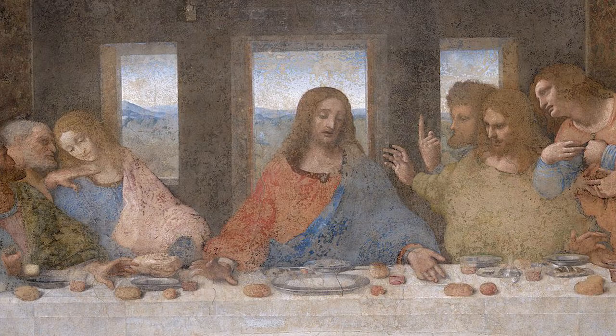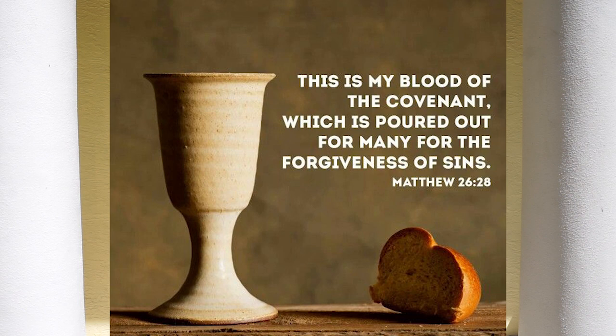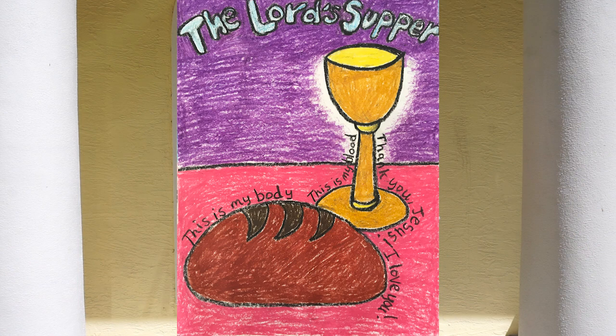Jesus is reaching with both hands towards the cup of wine and the bread. Let's hear God's word: 'As they were eating, Jesus took bread, blessed and broke it, gave it to the disciples and said, Take and eat it. This is my body. Then he took a cup and after giving thanks, he gave it to them and said, Drink from it, all of you, for this is my blood of the covenant, which is poured out for many for the forgiveness of sin.' This is showing the first Lord's Supper when Jesus describes the new covenant in his blood and shows the act of communion for us to always remember what he has done for us.